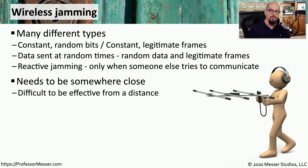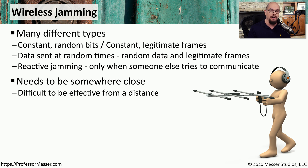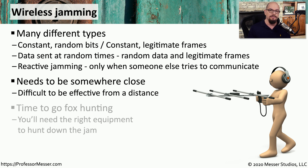To be able to disrupt devices on a local wireless network, the jamming device would need to be relatively close so that it could overwhelm the good signal. This means that an attacker would either physically need to be somewhere near that wireless network or they would have needed to install a device somewhere near that physical network.